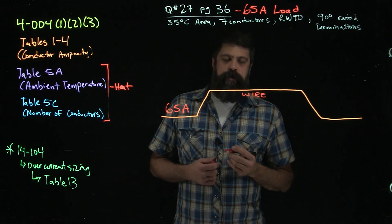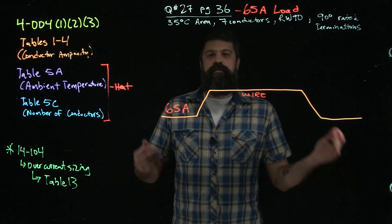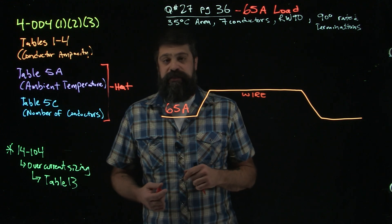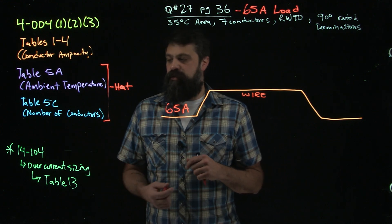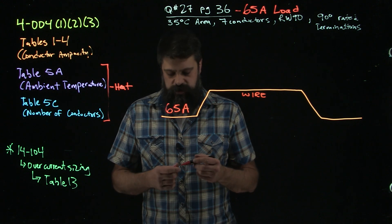This is where we find our wire. In order to figure out what wire size we need, we have to take into account tables 5A and 5C. That tells us based on the heat, based on the number of conductors, how do I start to derate this thing.